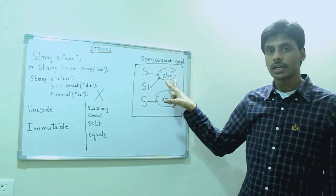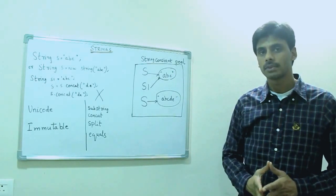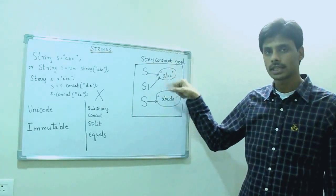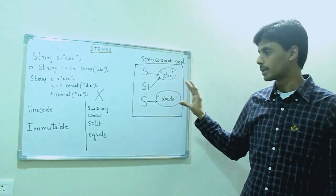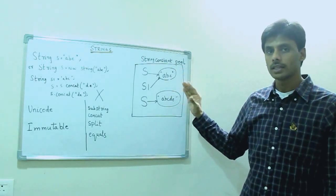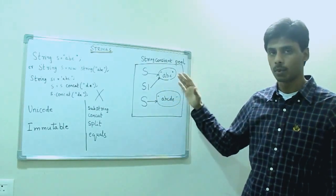it creates that string literal value, and if any other new string uses the same string literal value, it just points it to the same value in memory. Every time you manipulate or change a value of a string, the JVM creates a new string literal memory space within this string constant pool.